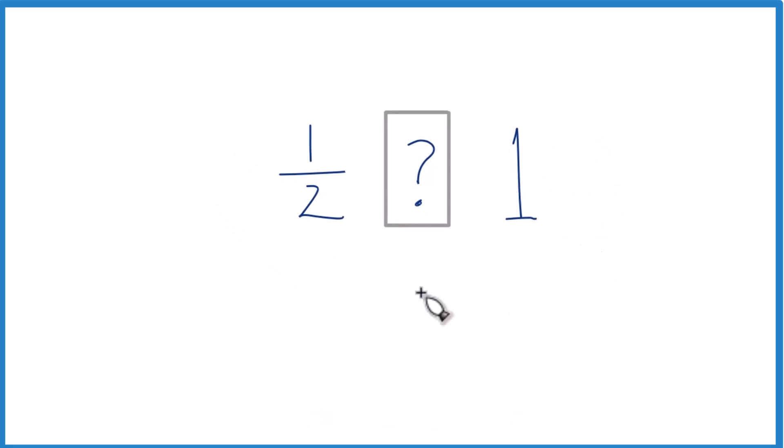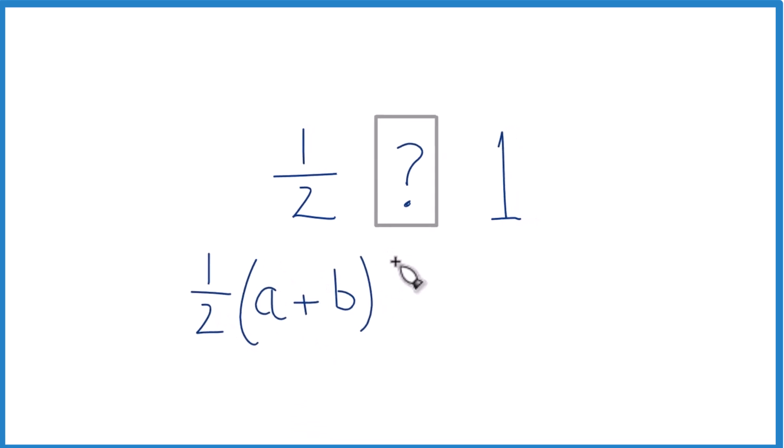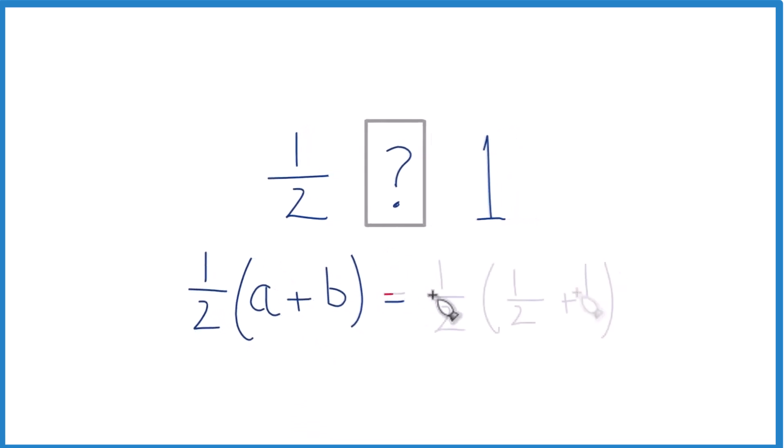We'll use this general formula. Basically what we do is we add these together: one-half plus one. Then we take half of it - we're pretty much just finding the average. So let's fill this in. We have one-half times one-half plus one.